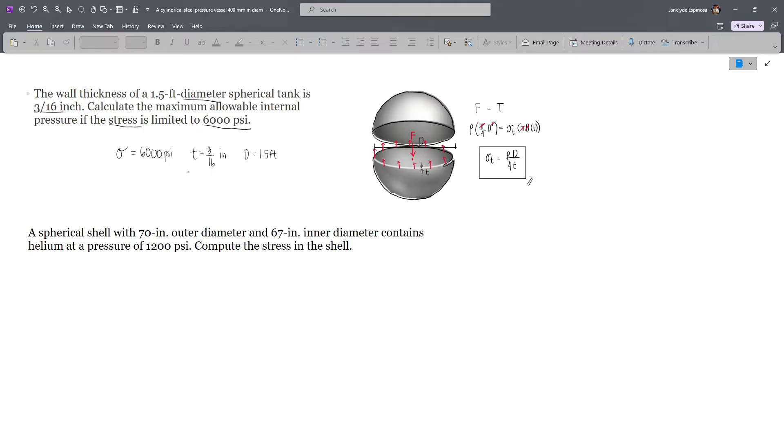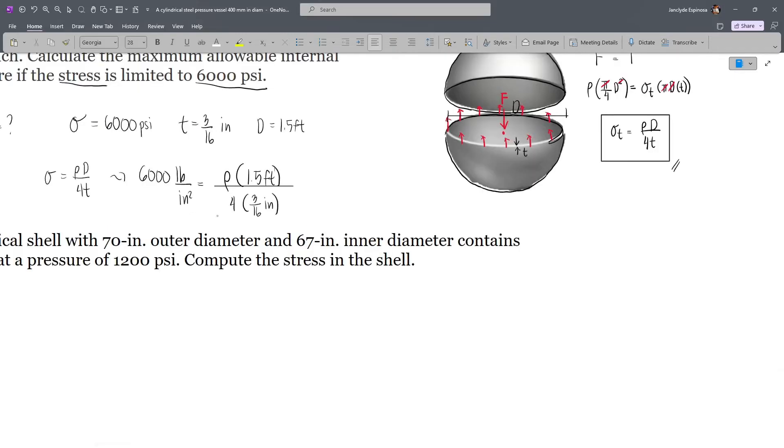What we have to solve is the maximum allowable internal pressure, so our P is unknown. We have PD over 4T: 6000 lb per square inch equals our internal pressure multiplied by the diameter, which is 1.5 feet, divided by 4 times the thickness, which is 3/16. Now notice that in all of our units we have inches. However, this is still feet.